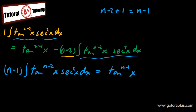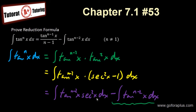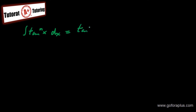Now I divide by (n−1) so that I can isolate the integral. This integral equals tangent^(n−1)(x) / (n−1). Putting this back into the first formula, I know that this is my tangent^(n−1)(x) / (n−1), which is what we want to prove. So the integral of tangent^n(x) dx equals tangent^(n−1)(x) / (n−1) minus the integral of tangent^(n−2)(x) dx.